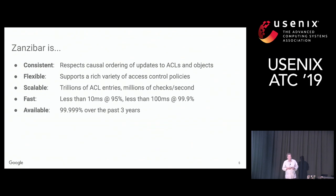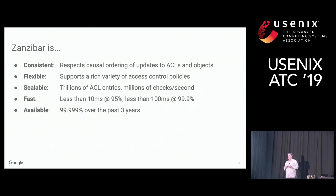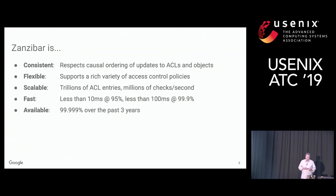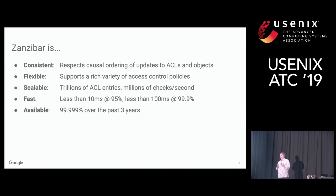In terms of performance, Zanzibar needs to be fast. Authorization checks are often in the critical path of user interactions — a search application may do tens or hundreds of authorization checks before presenting a single ACL-aware search result. Zanzibar achieves very good tail latency: less than 10 milliseconds at the 95th percentile. Finally, Zanzibar needs to be highly available, because if the authorization system is down, client services must assume the answer to any authorization check is no for privacy reasons, creating a huge denial of service problem.